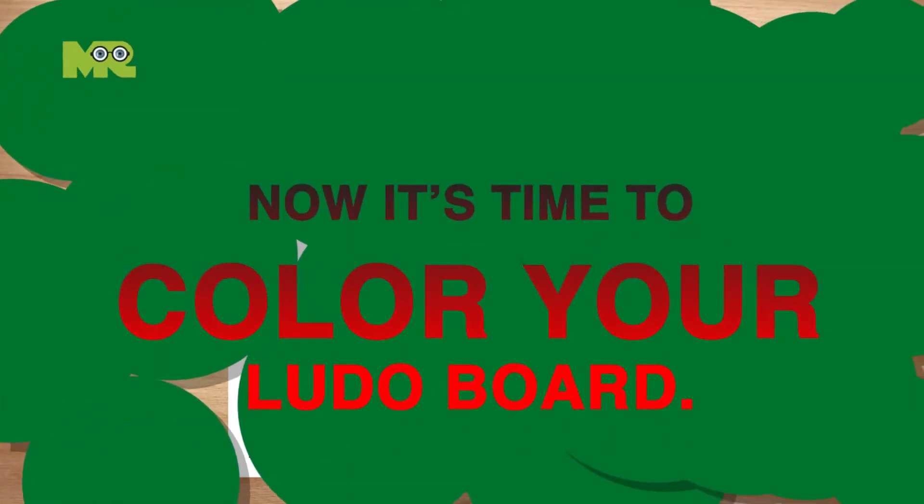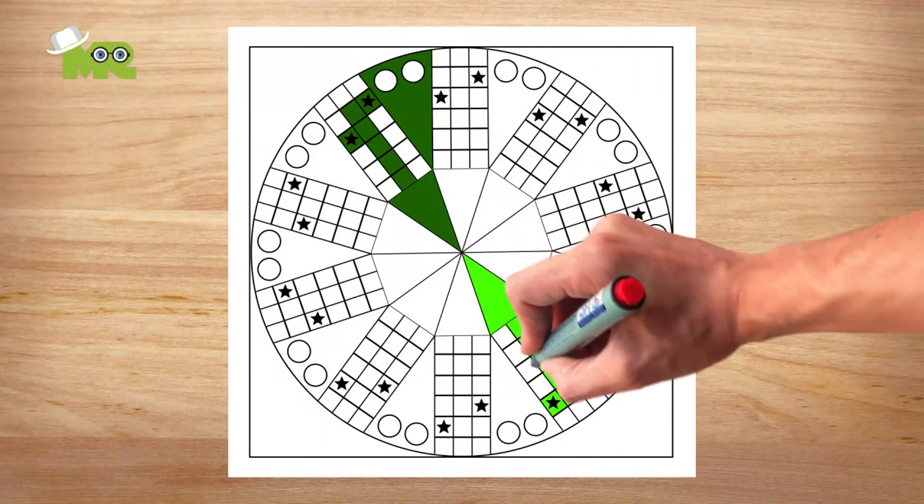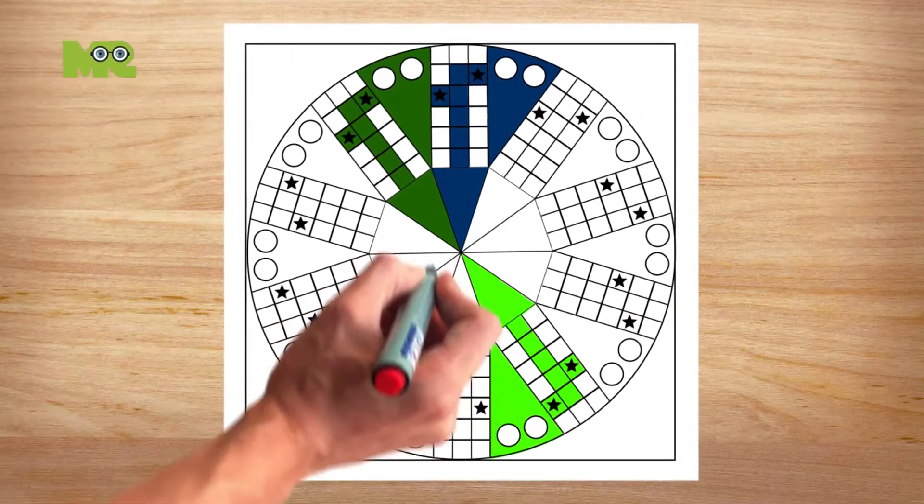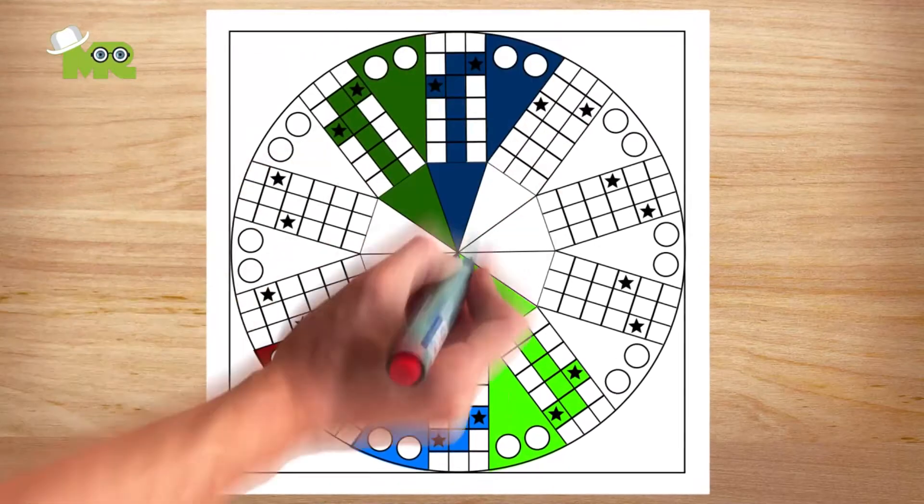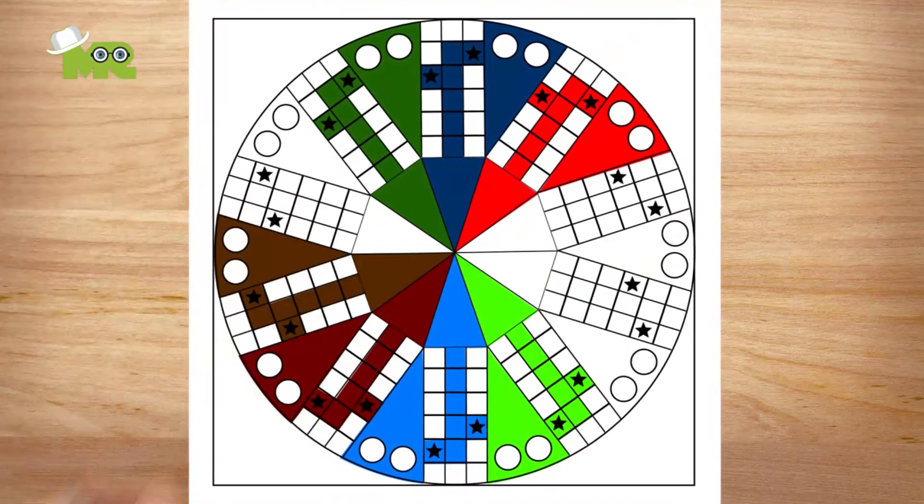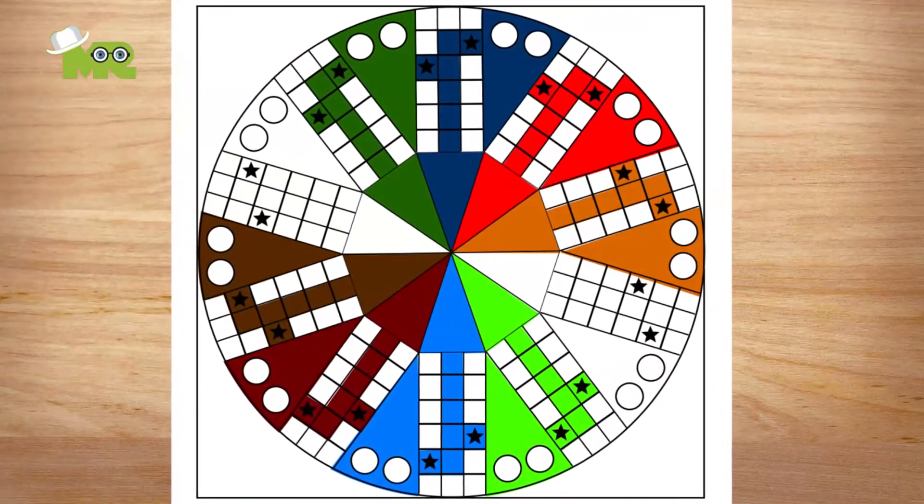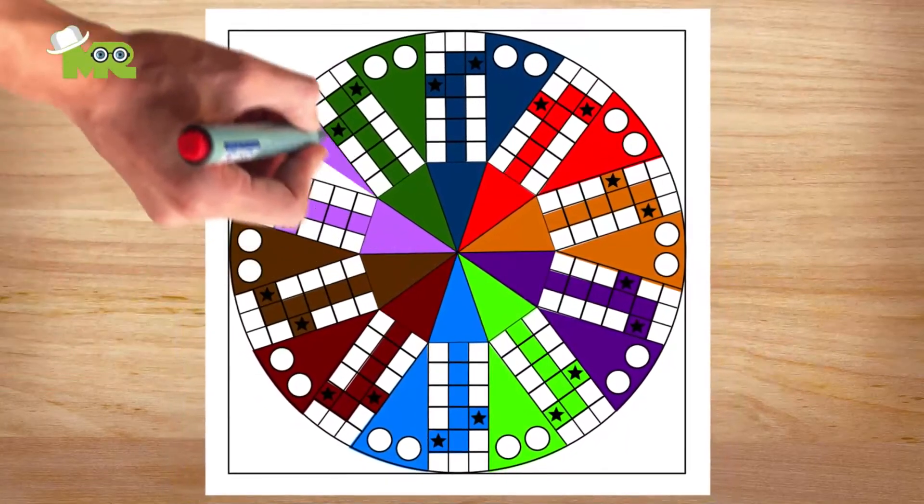Now it's time to color your Ludo game board. It's my favorite part. Let's begin with color green here, light green here, color blue over here, and light blue here, color red here, and a lighter shade of red over here. Color brown here, then lighter brown here. And finally, color purple in this base, and a lighter shade of purple over here.